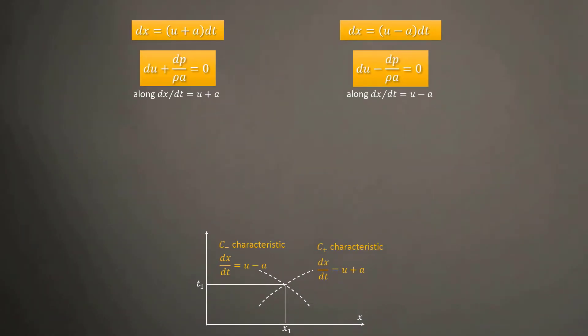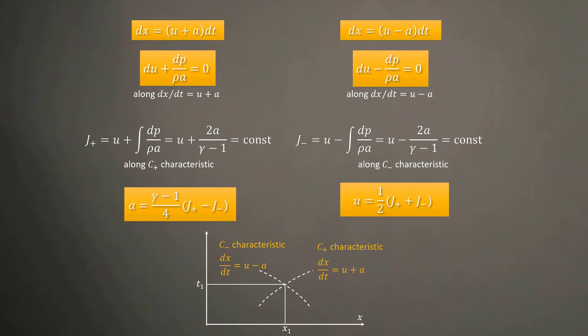Now, we can easily integrate these compatibility equations along the respective characteristic lines to obtain the Rayman invariants, which can be expressed for a calorically perfect gas using the expression shown here. If J plus and J minus are known at a point in the XT plane, then the velocity and speed of sound can be determined from these equations.